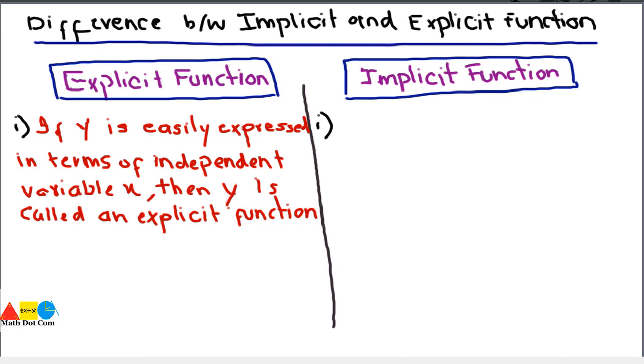First of all we have an explicit function. If y is easily expressed in terms of independent variable x, then we can say that y is called an explicit function. How it is represented? It is represented as y equals f of x.